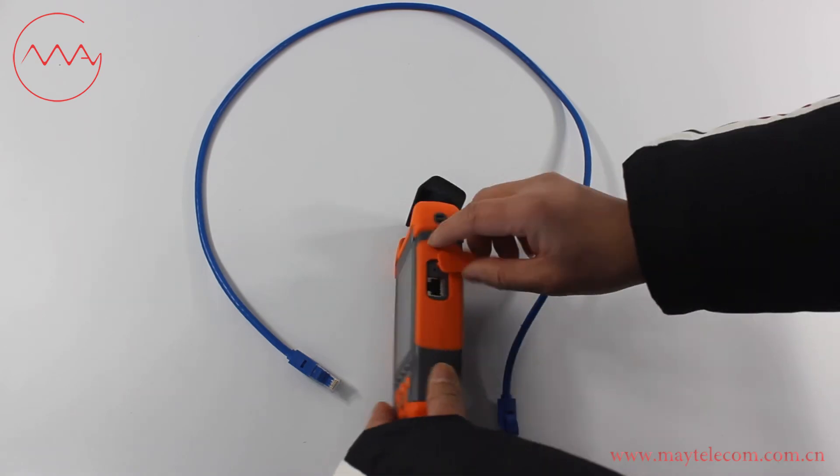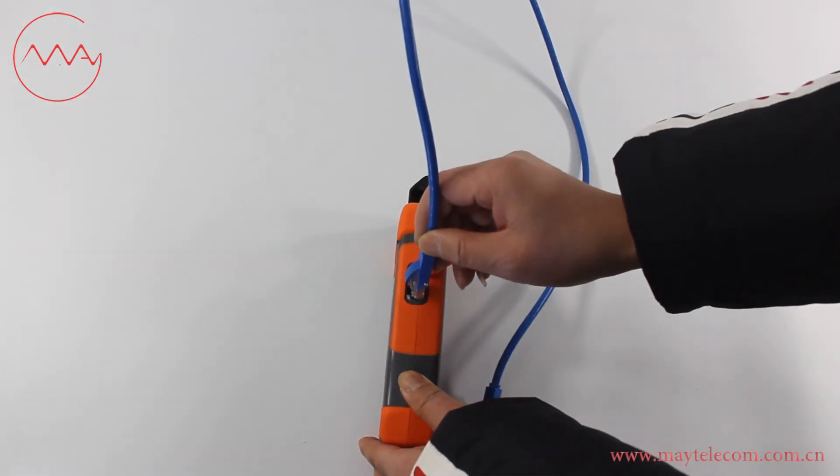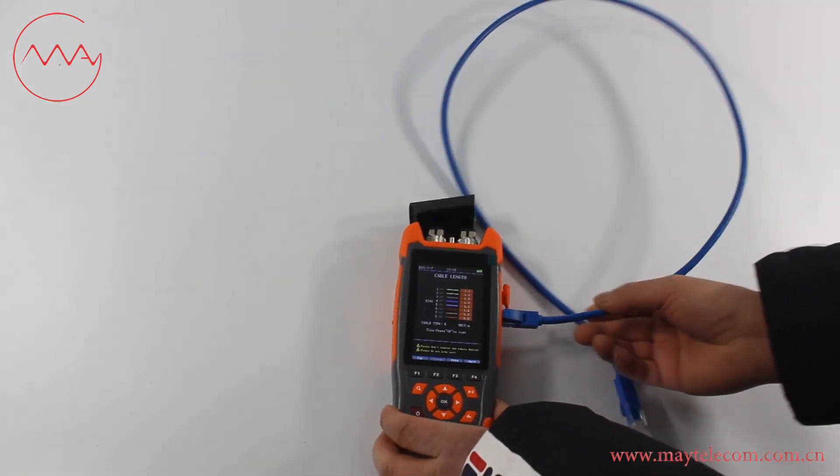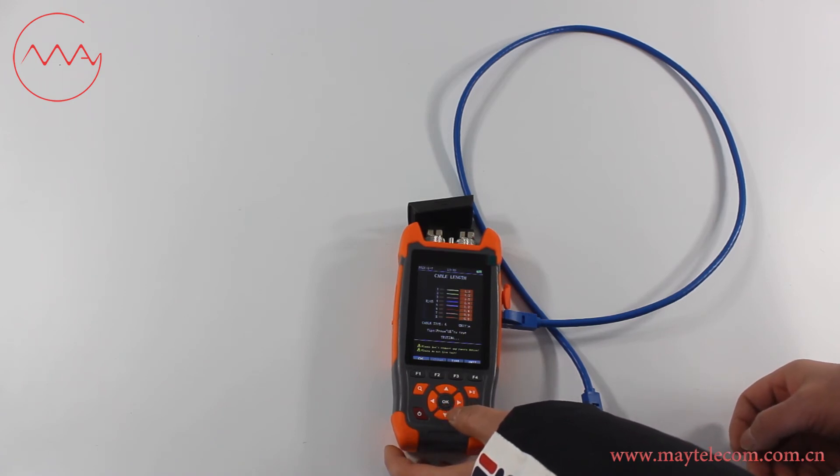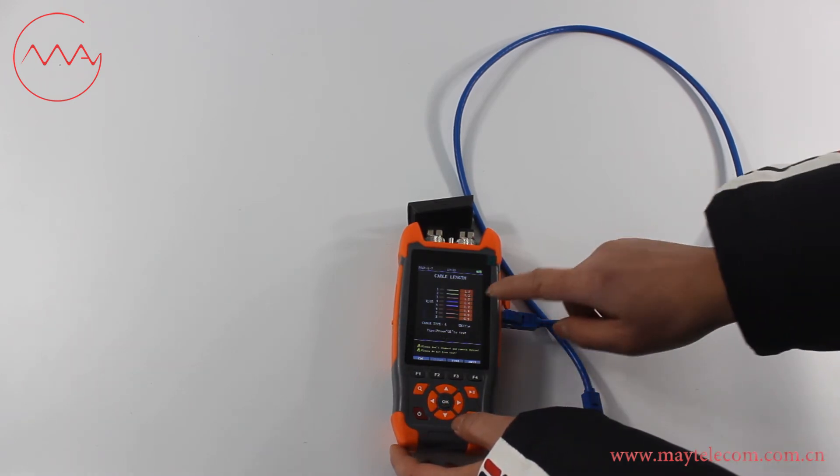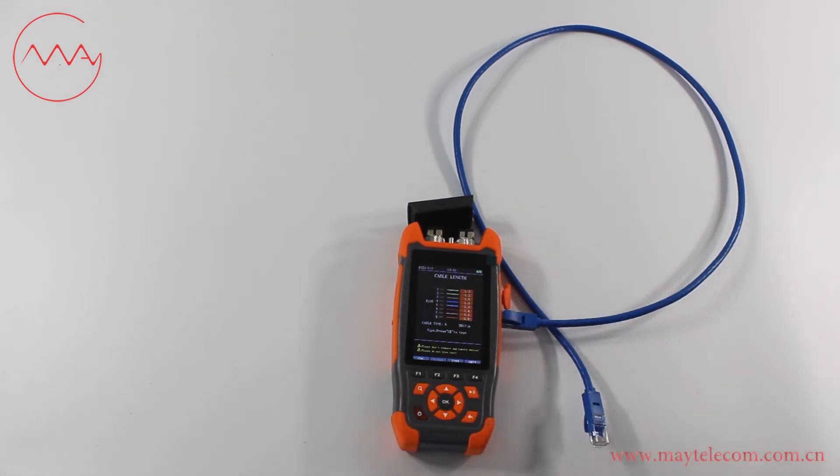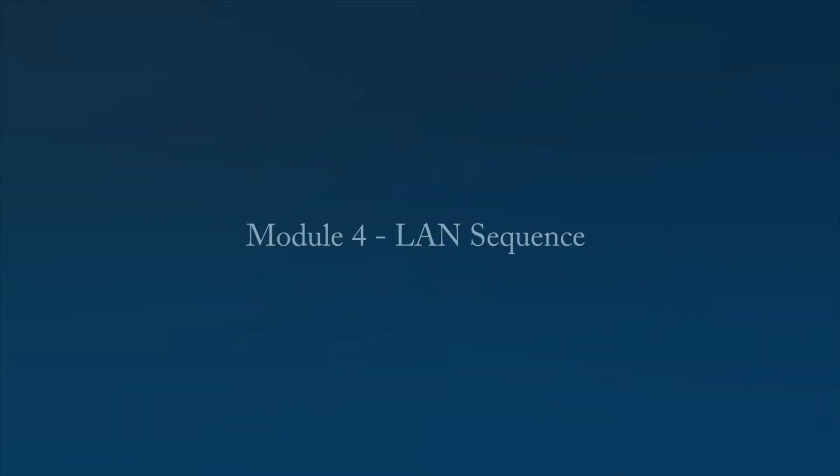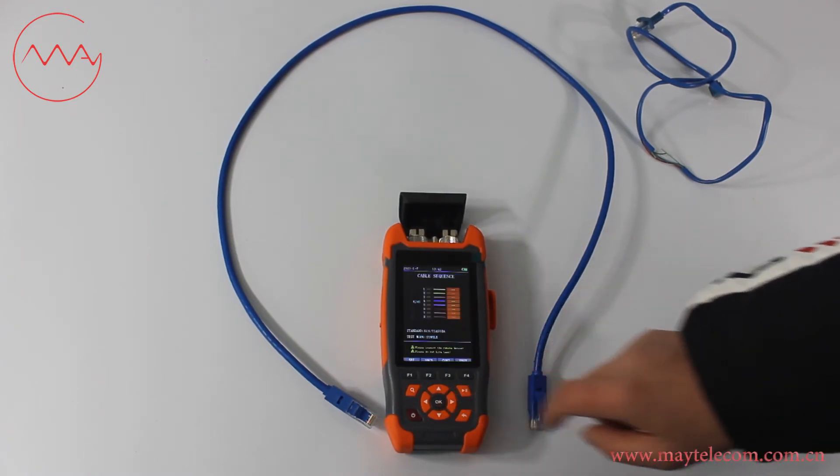On the right side of the pump power meter is the insulated port. Insert insulated cable into the port and press OK to start testing. The measured length is 1.2 meters. Press navigation key to select length sequence and press OK to enter.